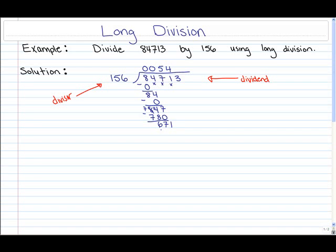And 4 times 156 gives us 624 and we're now ready to subtract those two numbers. So 11 minus 4 gives us 7, 6 minus 2 gives us 4 and I'm now ready to bring down the next number in the dividend which is the 3.